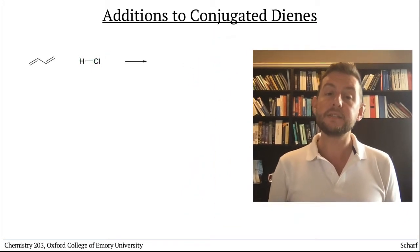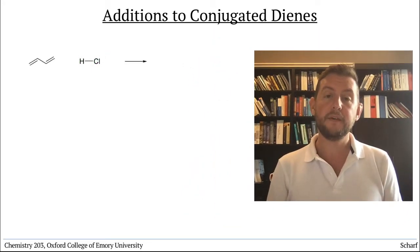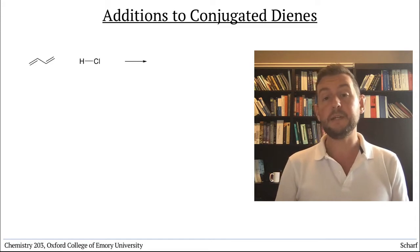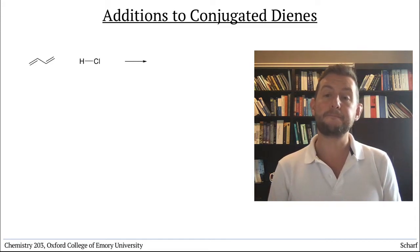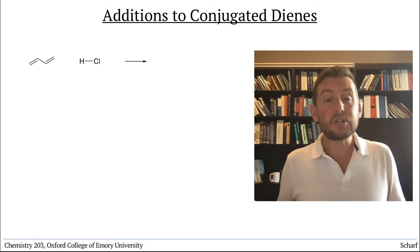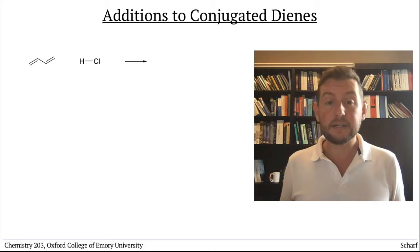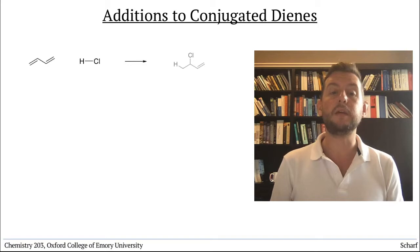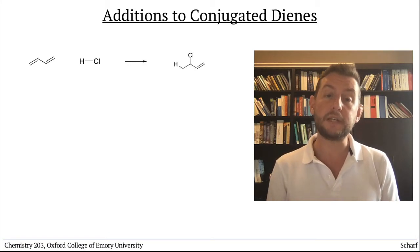Let's look at the simplest example to begin, the reaction of 1,3-butadiene with HCl. If we were treating each alkene as an isolated alkene, we'd expect the product of this reaction to be 3-chloro-1-butene.